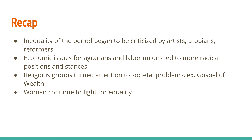To recap: the inequality of the period began to be criticized by artists, utopians, and reformers. Agrarians faced economic issues related to debt and monetary policy. Labor unions led to more radical positions and stances. Religious groups turned their attention to societal problems through the Social Gospel. And women continued to fight for equality. Please come back to watch lecture number 57 — I'll see you then.